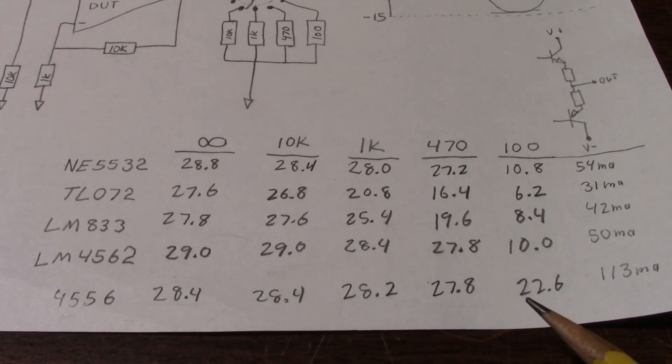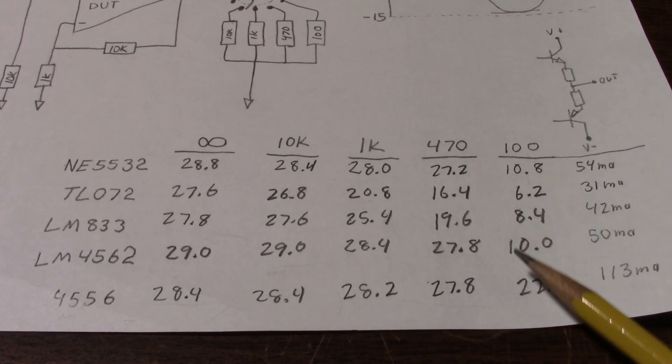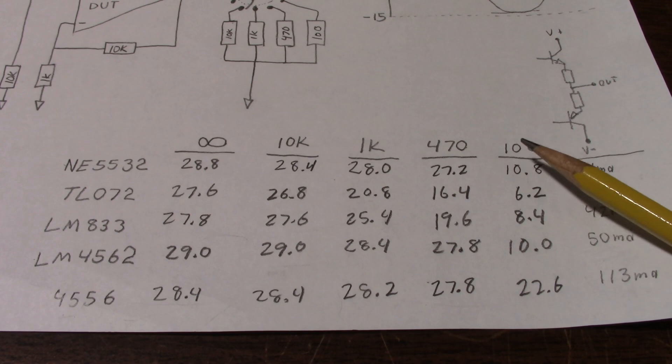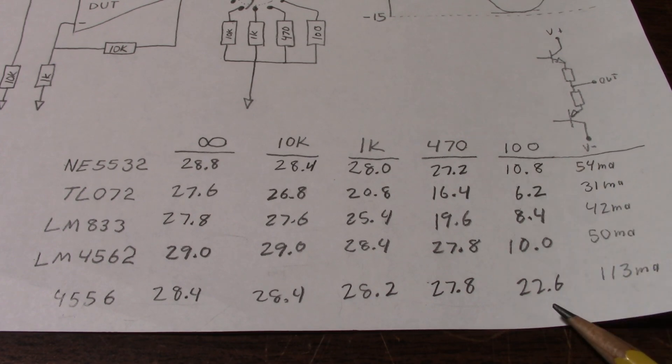You can see it did much better than the other chips. These numbers here are the peak output current measured with the 100 ohm load. What this is showing is the output current limit. I believe all the chips are in current limit mode with 100 ohm load—that's the reason for testing it there.